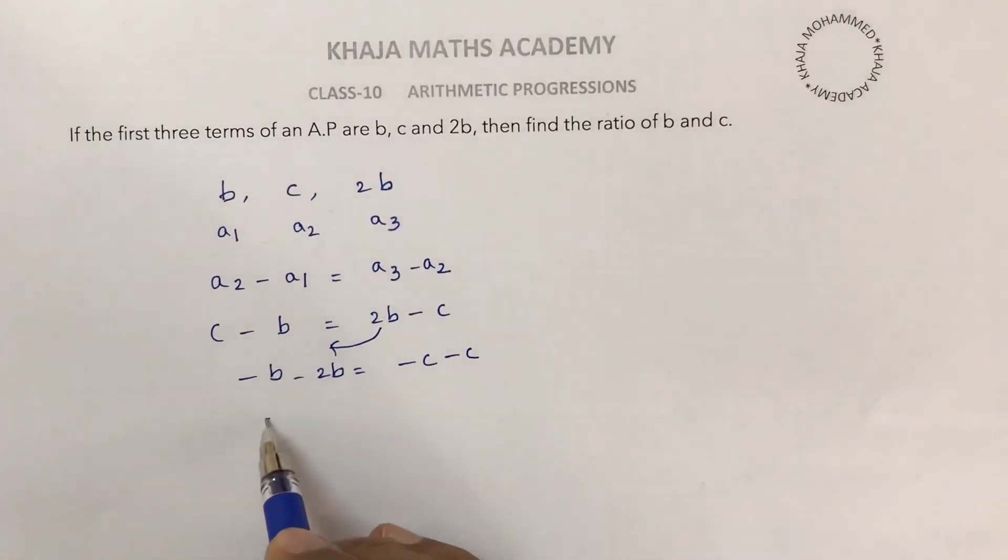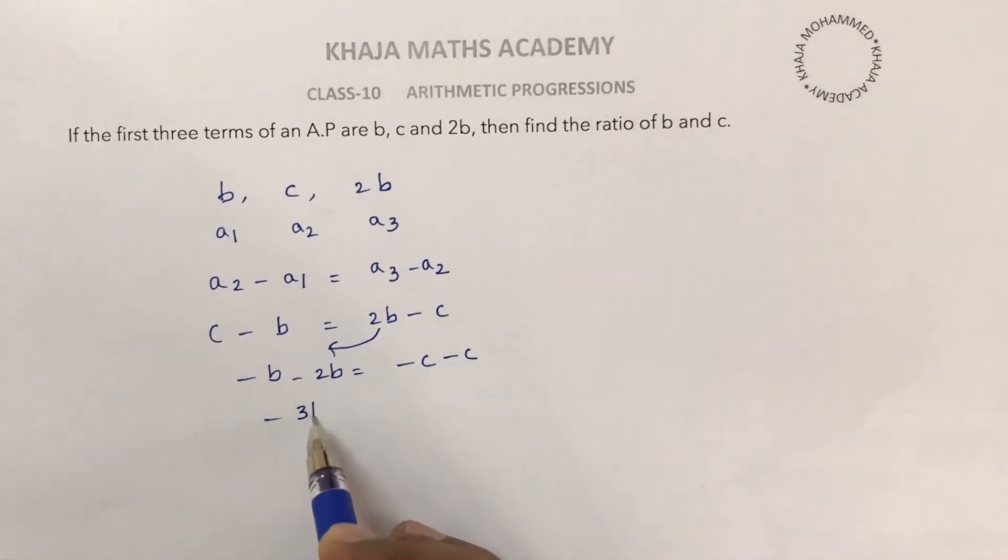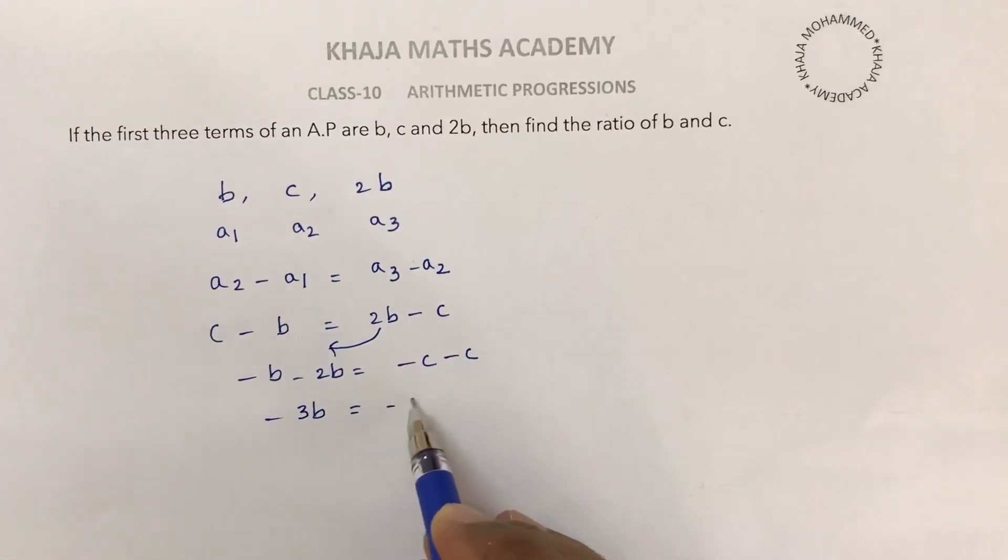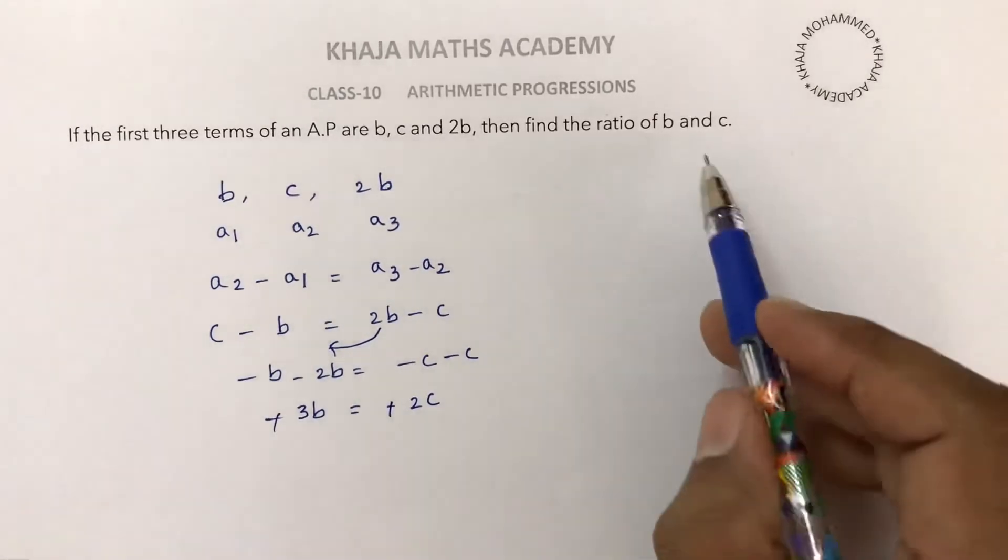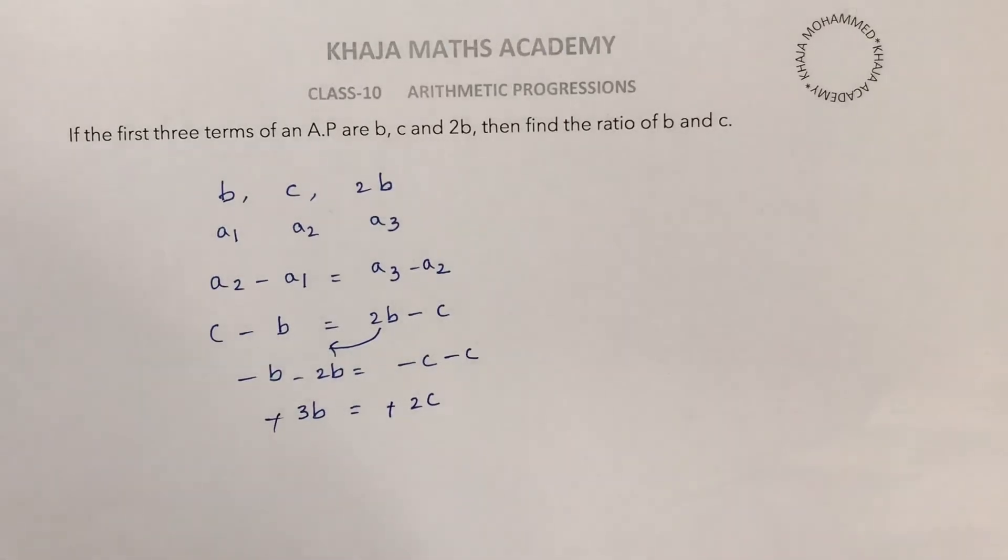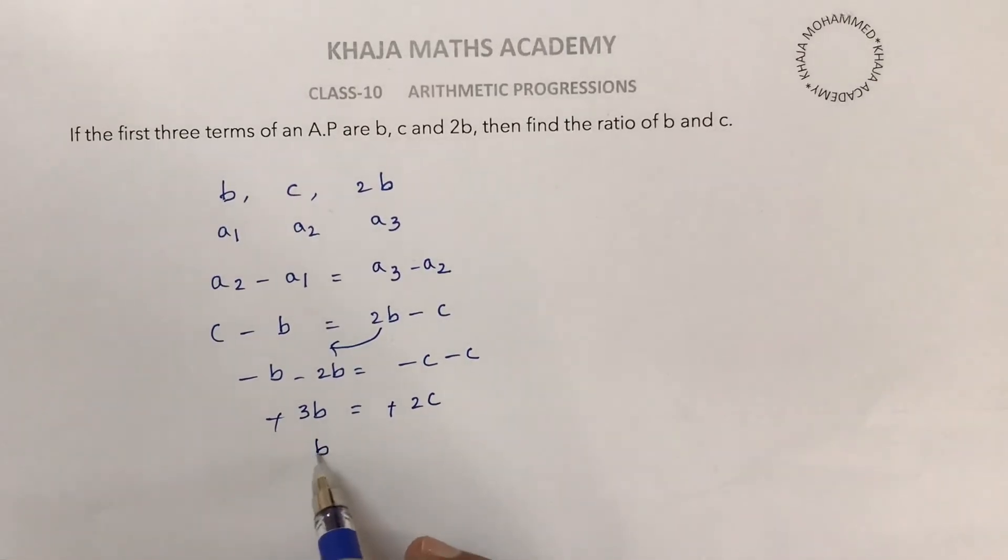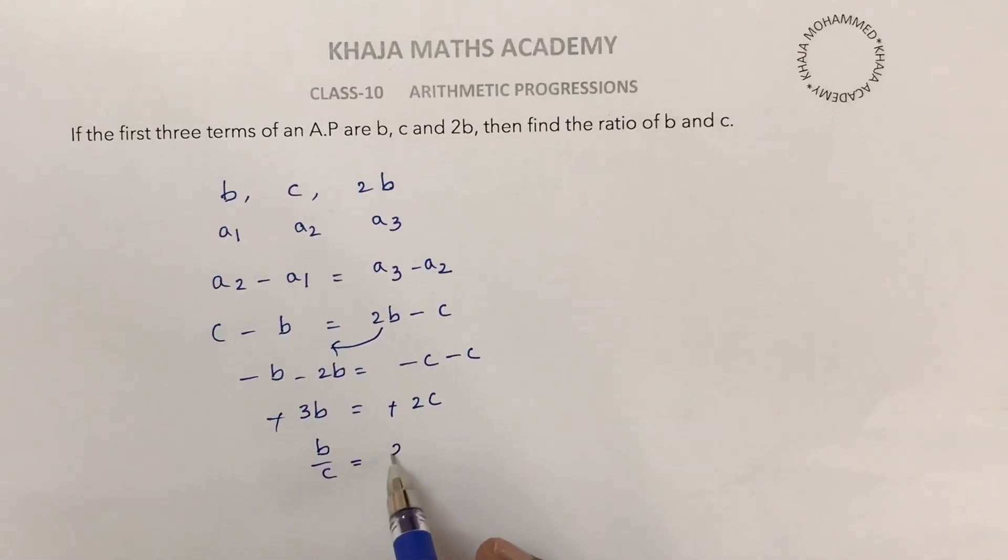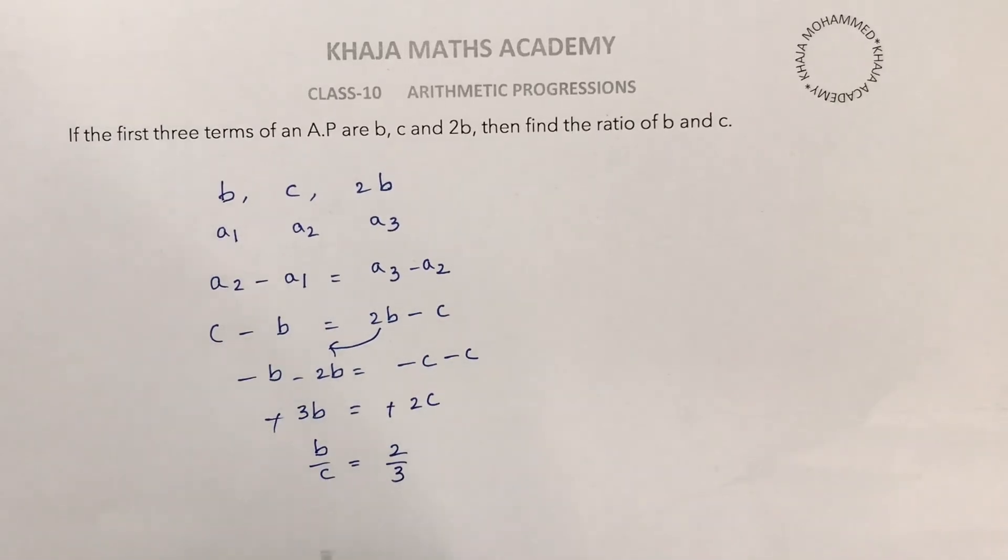So minus 3B equals minus 2C. Minus minus cancel, so we need to find the ratio of B to C. B by C is 2 by 3. Therefore B is to C is 2 is to 3.